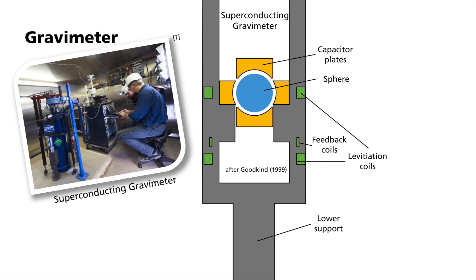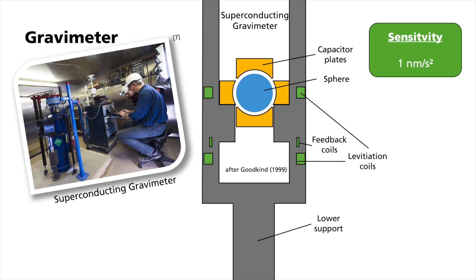For this purpose, a sphere of niobium is held at a stable position in a magnetic field. This field is maintained by an electric current in superconducting coils. The current which is necessary to generate the field is then proportional to the earth's gravity. The drift of those instruments is about a factor of a thousand smaller than that of traditional spring gravimeters, and they can measure variation in earth's gravity at tidal periods at a level of 1 nm per second squared.